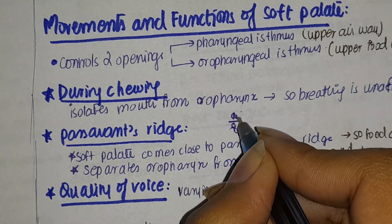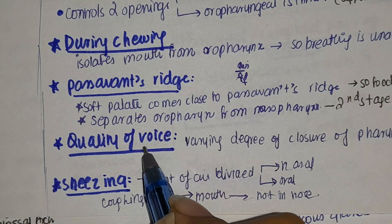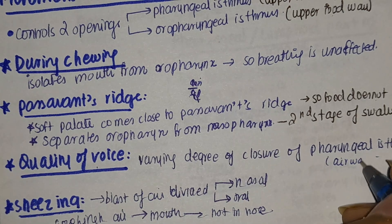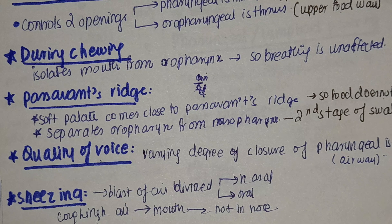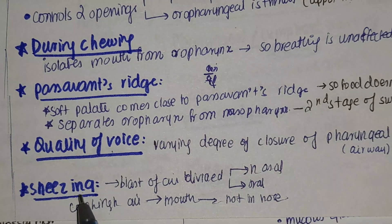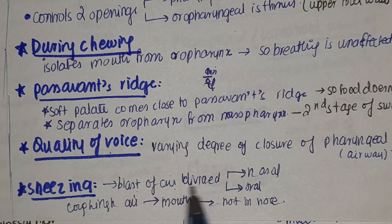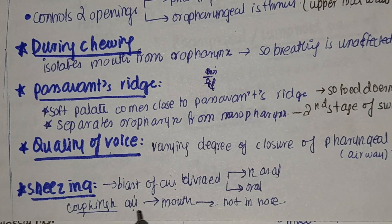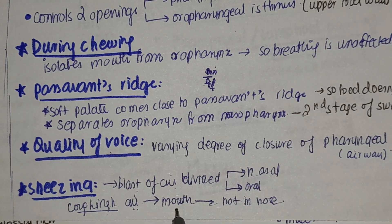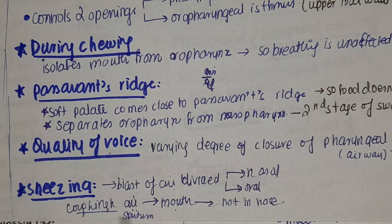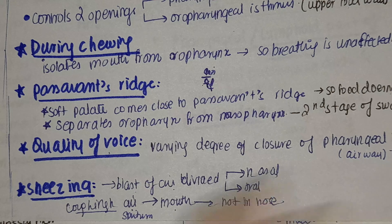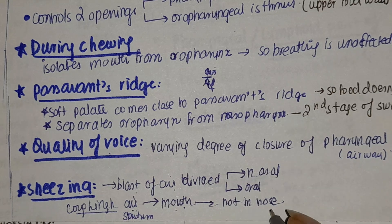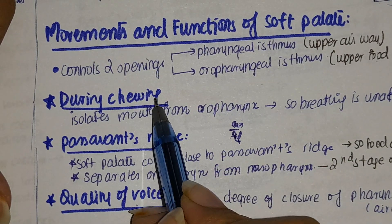Regarding voice quality: when we close the pharyngeal isthmus in various ways, we can produce different types of phonics or sounds. During sneezing, the blast of air is divided between the nasal and oral cavities. In coughing, however, the air and sputum are both pushed out through the mouth and not through the nose.